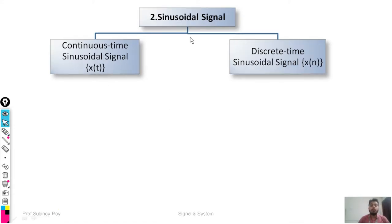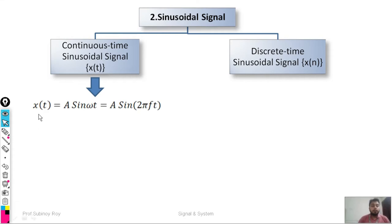The second signal is the sinusoidal signal. Sinusoidal signals include both cosine and sine signals. First we will discuss the continuous time sinusoidal signal, represented by x(t), and then the discrete time sinusoidal signal, represented by x(n). The continuous time sinusoidal signal x(t) is represented as x(t) = A sin(ωt) = A sin(2πft), where ω is the angular frequency, A is the amplitude, and t is the time.